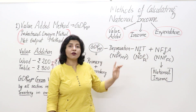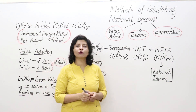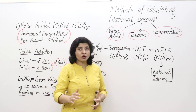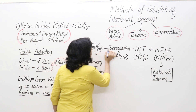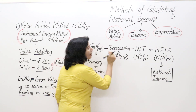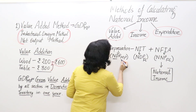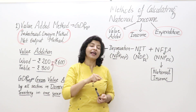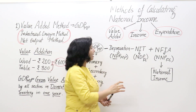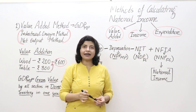To convert gross into net, we subtract depreciation — that is, the wear and tear cost of machines. After subtracting depreciation from GDP MP, we arrive at NDP at Market Price, that is Net Domestic Product at Market Price. Then, to move from market price to factor cost, we subtract Net Indirect Taxes (NIT), which is indirect taxes minus subsidies. After subtracting NIT from NDP MP, we get NDP at Factor Cost.